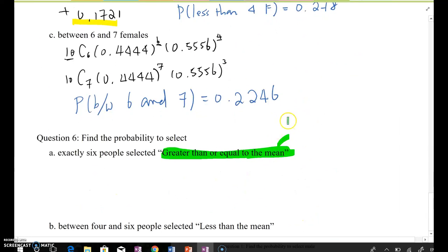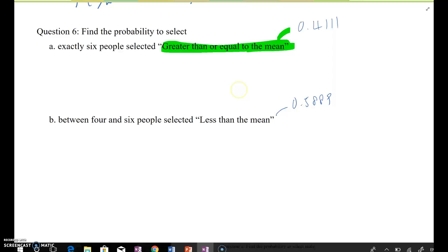So this probability 0.4111 and this one 0.5889. We're using those two values to try to find this probability here.